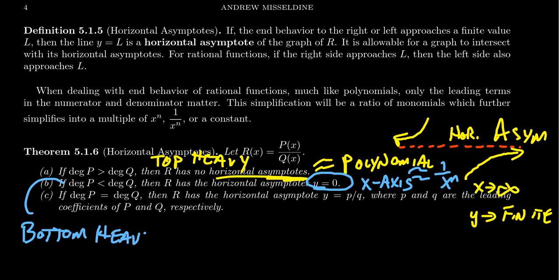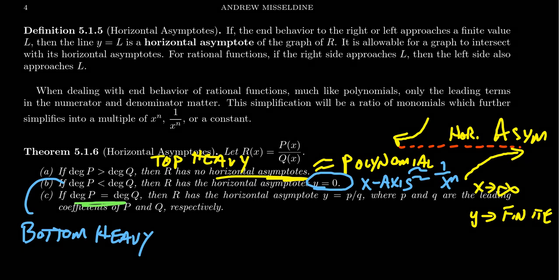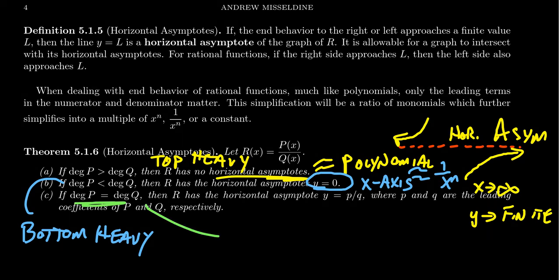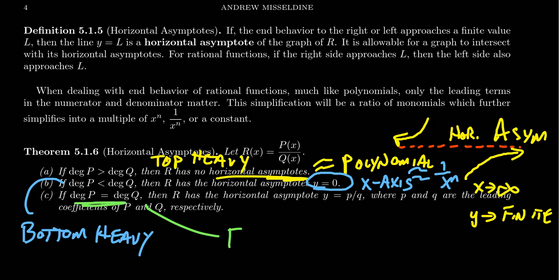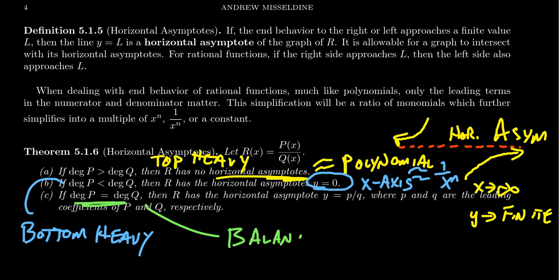The final possibility is when the two degrees are the same — the degree on top equals the degree on the bottom. We refer to this as the balanced case. In that situation, you do have a horizontal asymptote, and it will be y equals p over q, where p is the leading coefficient on top and q is the leading coefficient on the bottom.